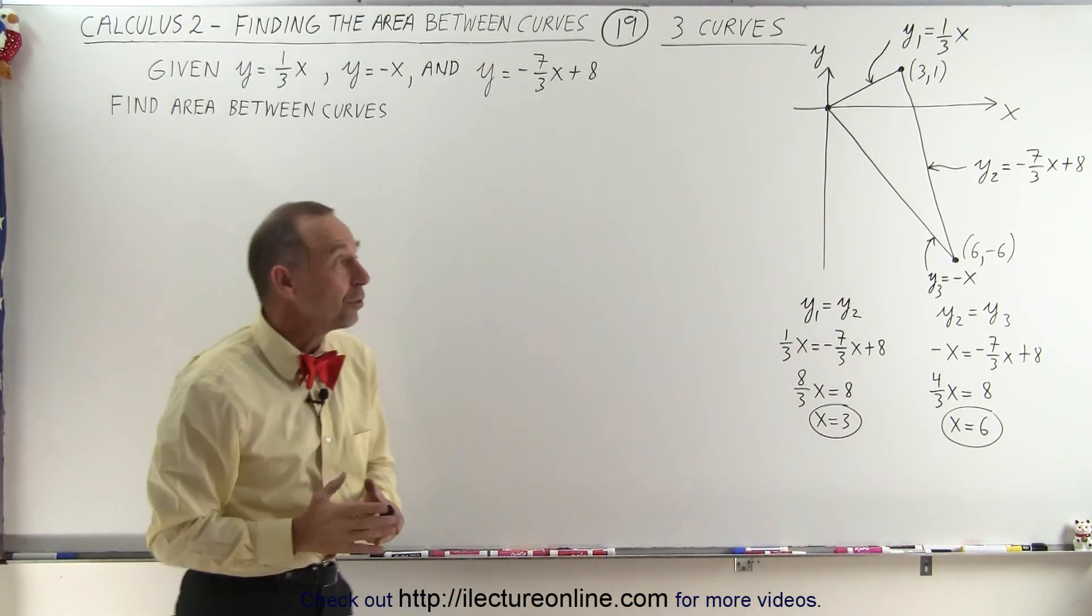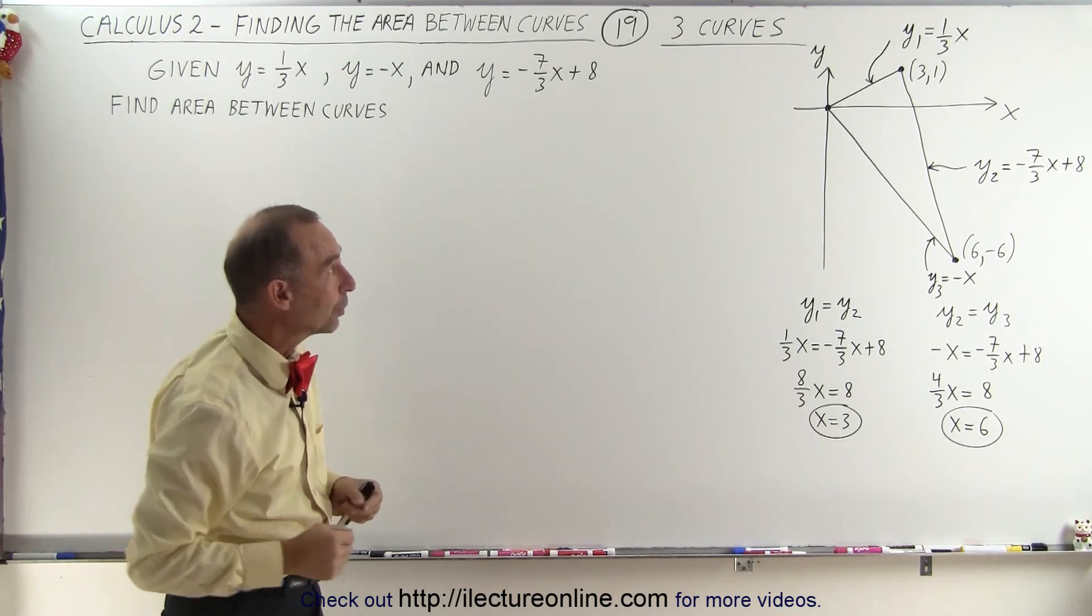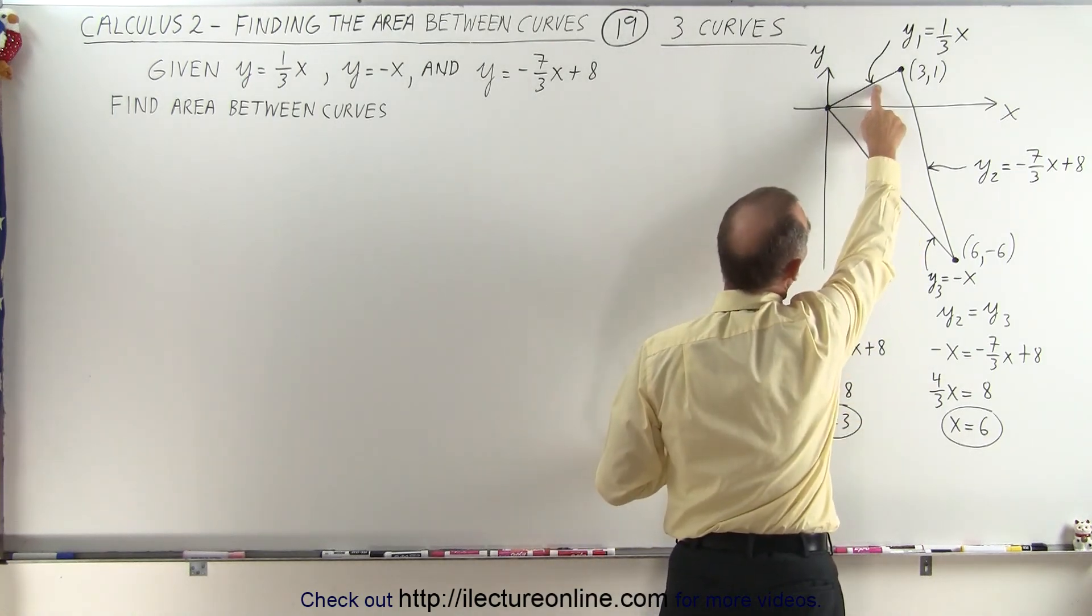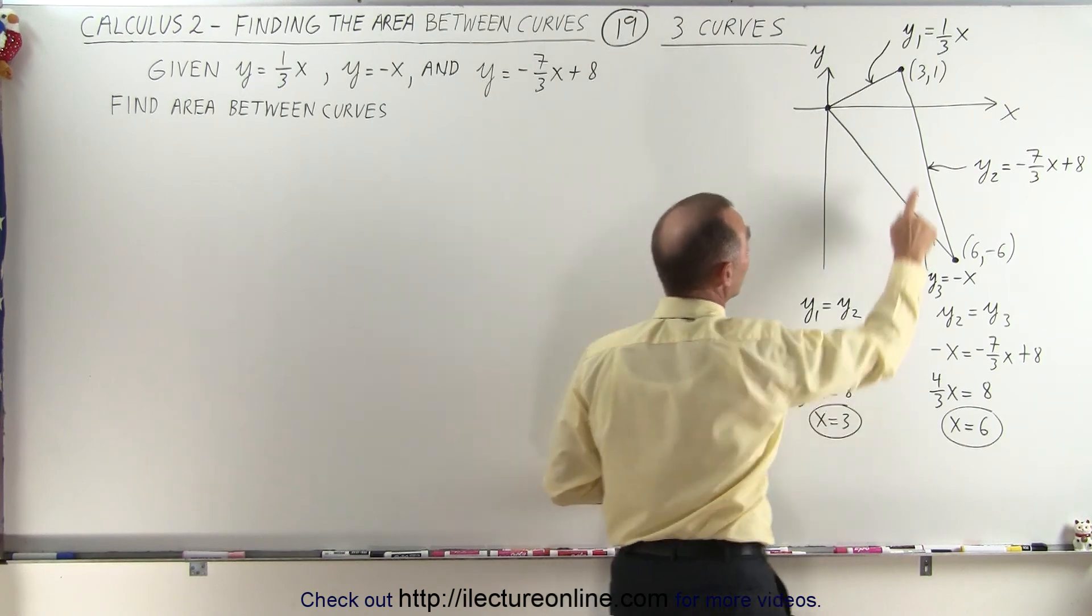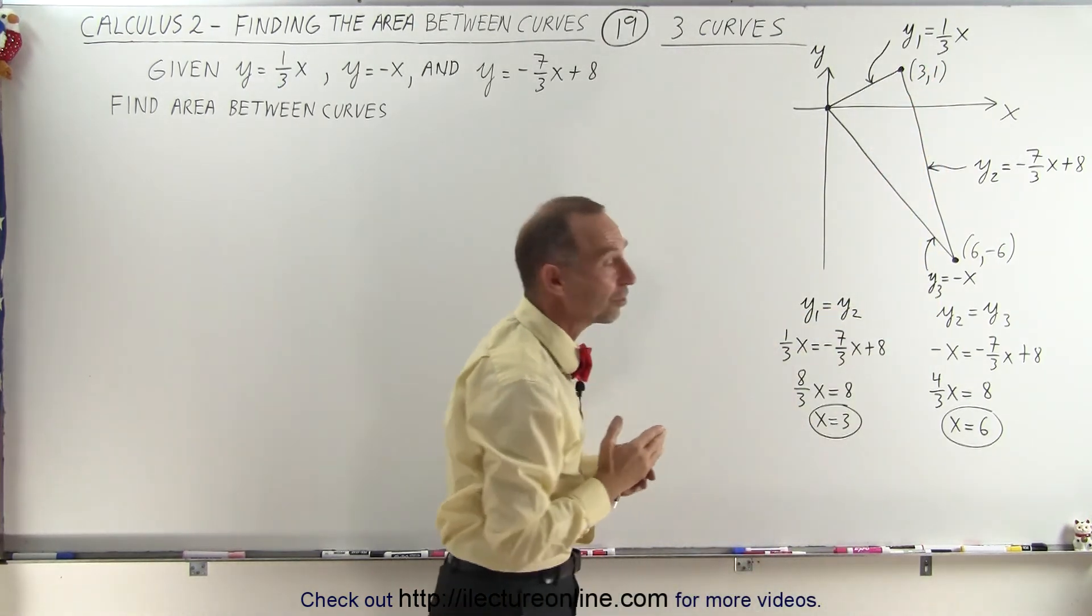So the first thing we need to do is find where those curves, in this case straight lines, meet, and we can do that by setting the equations equal to one another. When we set y1 equal to y2, we can find that x equals 3, we plug that in, we find y equals 1, so the coordinates at that point is (3, 1).